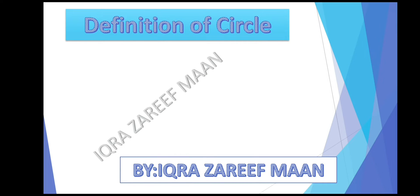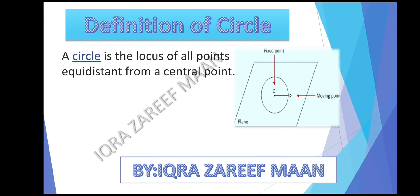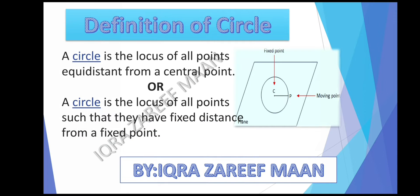First, the definition of the circle. A circle is the locus of all the points equidistant from a central point. In other words, a circle is the locus of all points such that they have a fixed distance from a fixed point. A circle is a 2D shape.